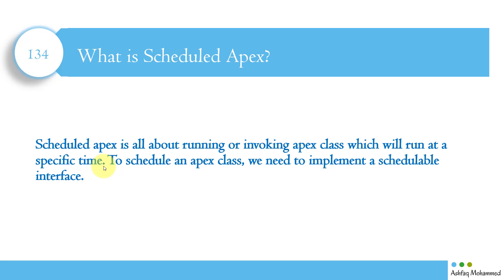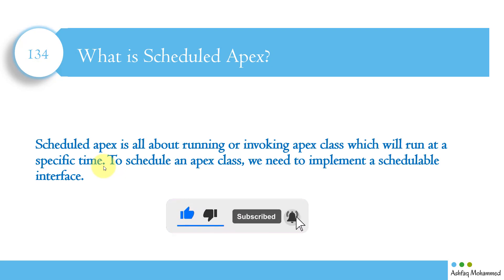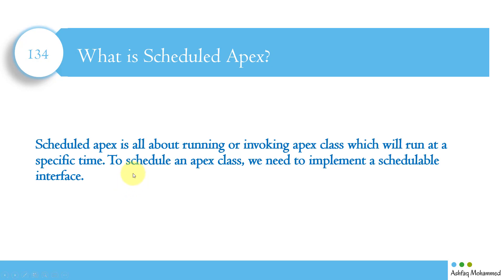For example, suppose you want to run some logic every night at 12 a.m. which will update the status of an opportunity. You might want to query all opportunities that are not closed, and if they are open without any activity for more than 90 days, you want to close them automatically every night. In this kind of scenario you would use scheduled apex. The advantage is that you don't need user interaction — the system will automatically run that logic every night at 12 a.m.